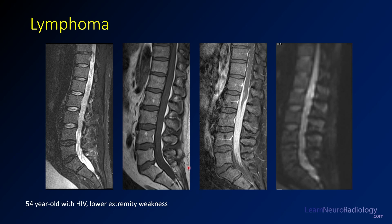This is a case of lymphoma — a 54-year-old with HIV and lower extremity weakness. On T2 with fat saturation, you see irregularity along the cauda equina from about L1 to L4-L5. On T1, the CSF is not as dark as it should be. On post-contrast, this can be incredibly deceptive: there is avid enhancement along all the nerve roots of the cauda equina, so much that it's encasing the conus and almost looks like a T2-weighted image. On DWI, the entire thecal sac has diffusion-restricted material — the tightly packed cellular material from lymphoma.